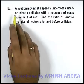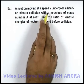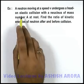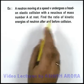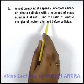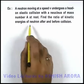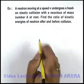In this example, it is given that a neutron moving at a speed v undergoes a head-on elastic collision with a nucleus of mass number A at rest. We are required to find the ratio of kinetic energies of neutron after and before collision.